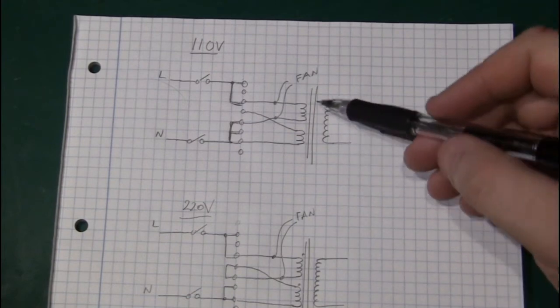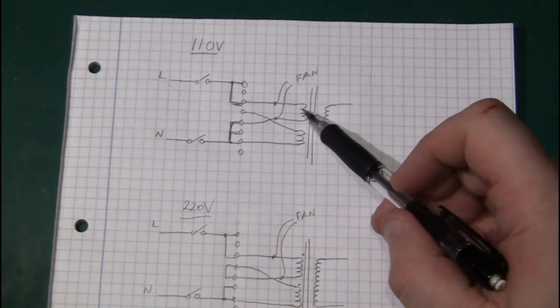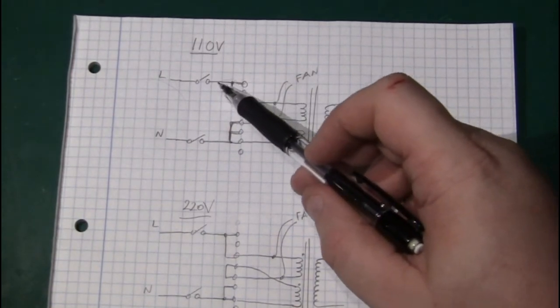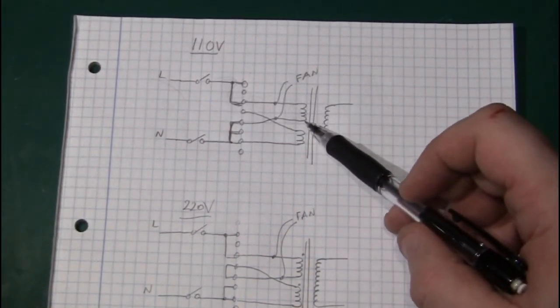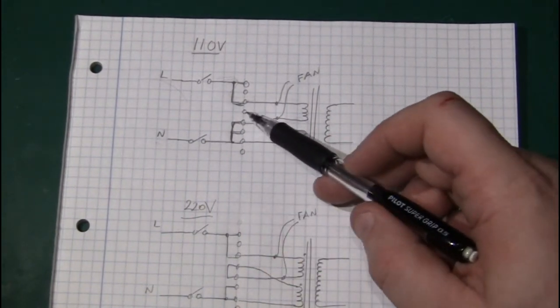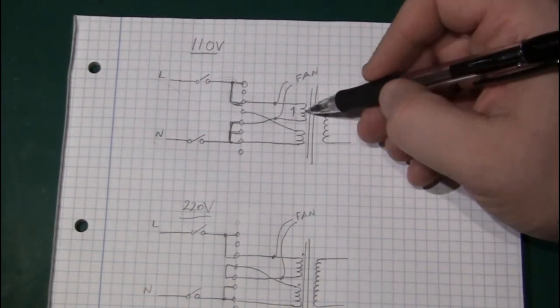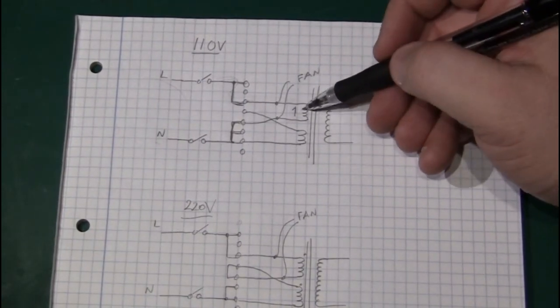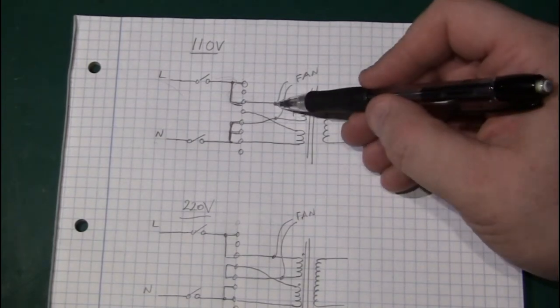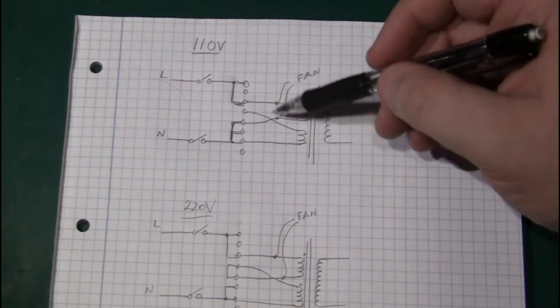And what happens then is that the transformer, which has two windings, is connected through here from live. The current flows in here through the transformer winding and back out again. And the other transformer winding is not connected. So it's just using one winding here. So we have 110 volts across one single winding here. And as you can see, the fan is connected between these two wires. So everything is good. The fan has 110 volts.